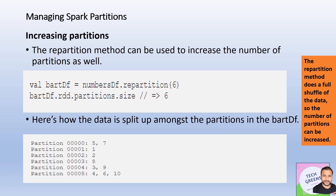One thing we cannot do with coalesce is increase the number of partitions. If a DataFrame has four partitions and we try coalesce(8), the partition count stays at four. With repartition, we can always increase the number of partitions — that is one key distinction to keep in mind.